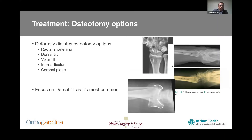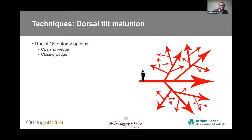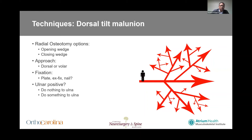When talking about treatment options, your deformity typically dictates what you do. We'll focus on dorsal tilt as the most common deformity. When treating dorsal tilt malunions, you typically do some type of radial osteotomy — you have two options: an opening wedge or a closing wedge osteotomy. You can do either from a dorsal approach with a dorsal plate or a volar approach with a volar plate. You can also use an exfix or a nail.